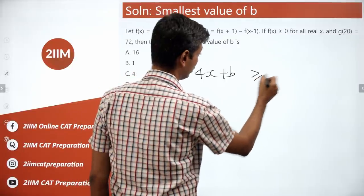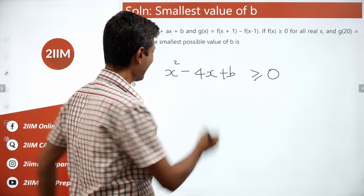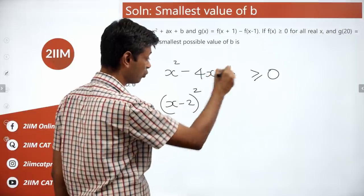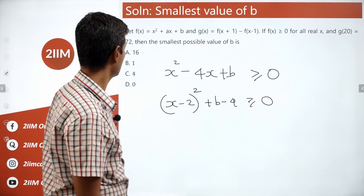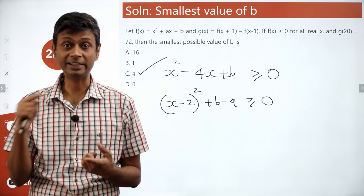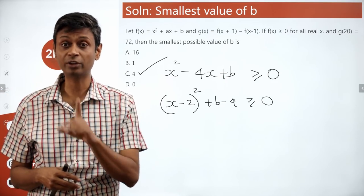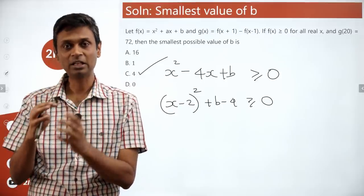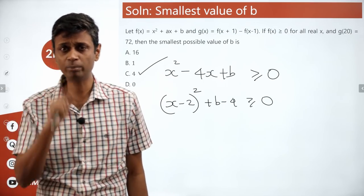With a = −4, f(x) = x² − 4x + b. For f(x) ≥ 0 always, complete the square: x²−4x+b = (x−2)² + (b−4) ≥ 0 requires b ≥ 4. The smallest possible value of b is 4.